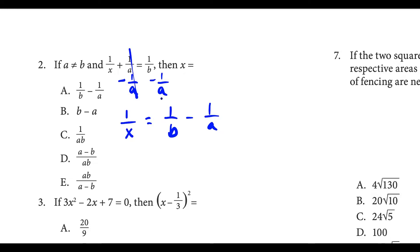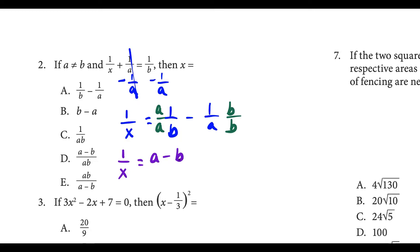The only time we're allowed to combine fractions into a single fraction by subtraction is when they have common denominators. So I would multiply the first fraction by A over A, and the second fraction by B over B. Now they have matching denominators AB and AB. In the next line, we're going to have 1 over X equals A minus B over A times B.